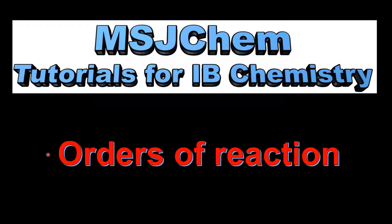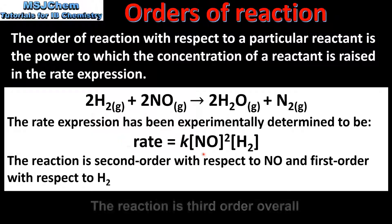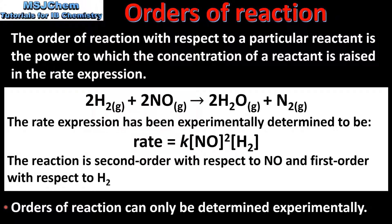This is MSJChem. In this video I will be looking at orders of reaction. The order of reaction with respect to a particular reactant is the power to which the concentration of a reactant is raised in the rate expression. In a previous video we looked at this reaction together with its rate expression. From the rate expression we can see that the reaction is second order with respect to nitrogen monoxide and first order with respect to hydrogen. It's important to note that orders of reaction can only be determined experimentally — they cannot be determined from the balanced equation for the reaction.